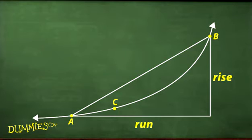At A, the curve is less steep than the line, and at B, the curve is steeper than the line.